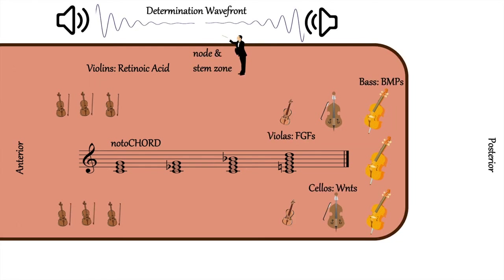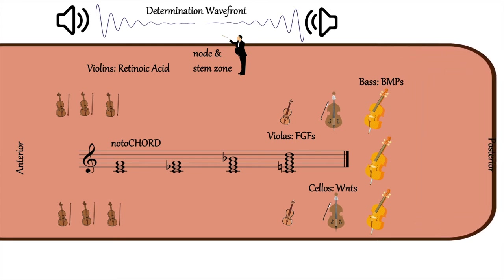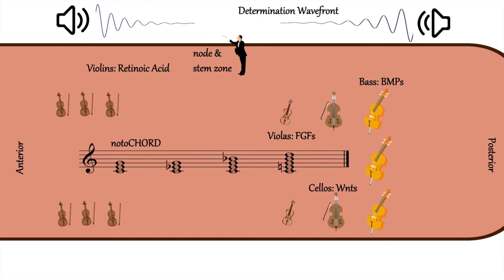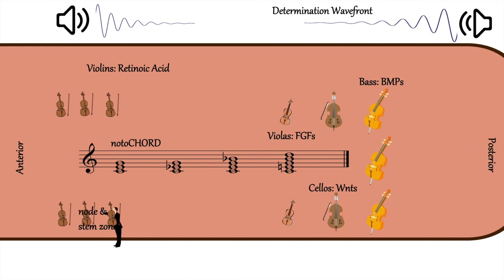Let's add another layer to this scene. As the musicians play, the room they're in starts to elongate from the posterior end. Remember that the room represents the anterior-posterior axis. As the posterior side of the room grows, the determination wavefront — which is where the instrument sounds are overlapping — begins moving towards the posterior side as well. The process of producing somites is still occurring, but the growth of the room results in the size of somites changing, since it takes longer for the conductor to circle around.